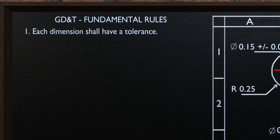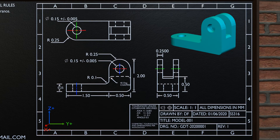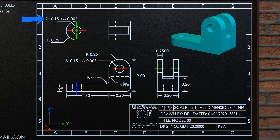The first rule says each dimension shall have a tolerance. Let's take a look at this drawing and see whether all the dimensions are meeting the first fundamental rule. This dimension of diameter 0.15 is having its tolerance, so it is in line with the first rule.